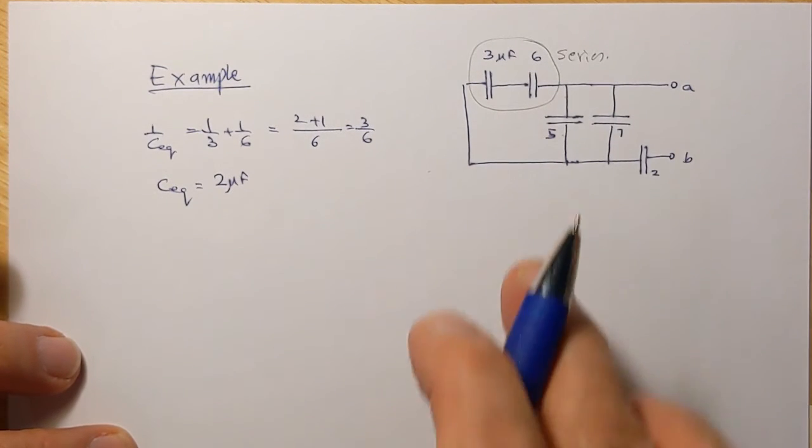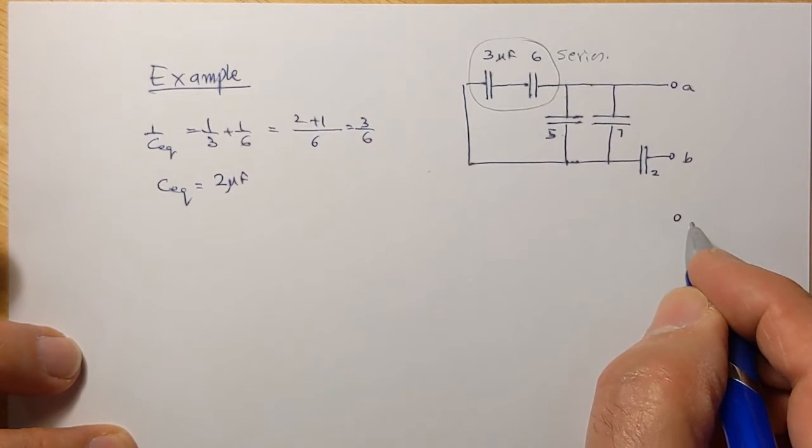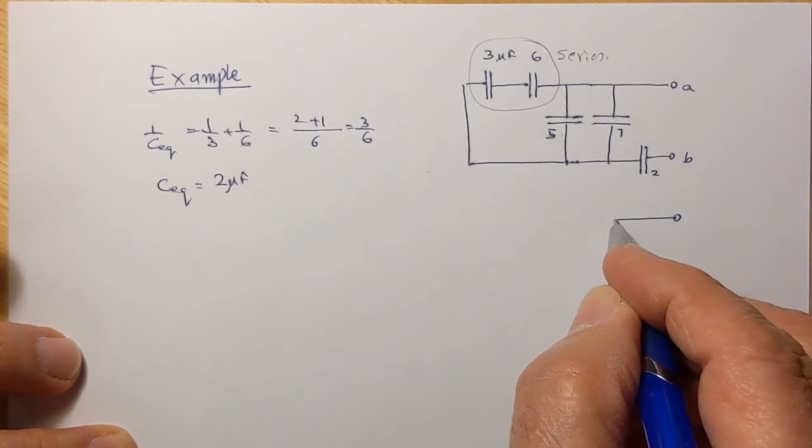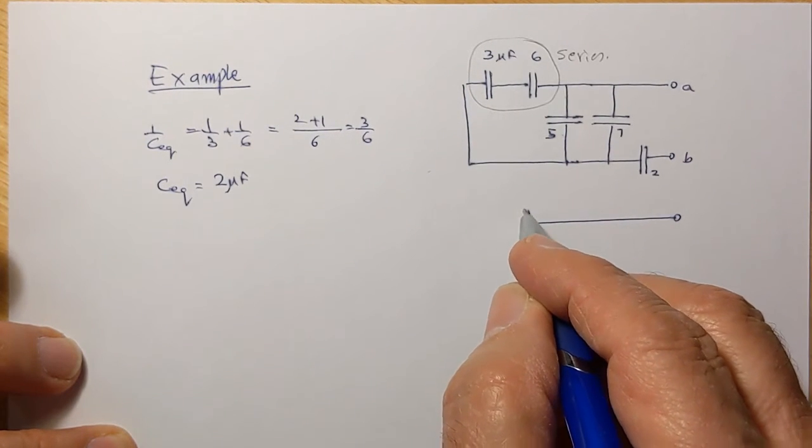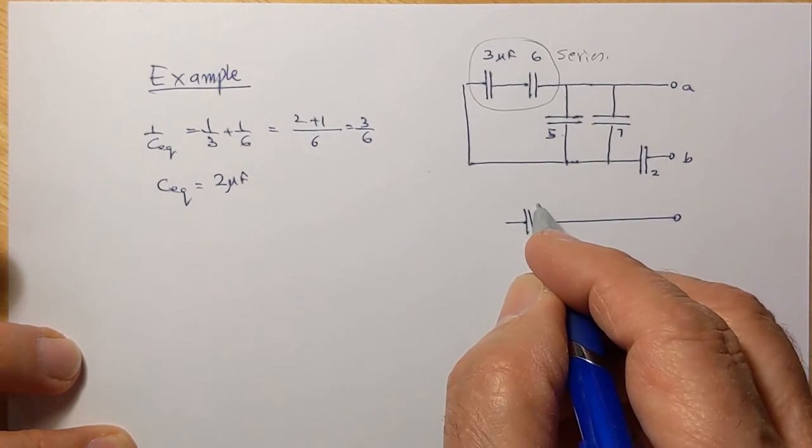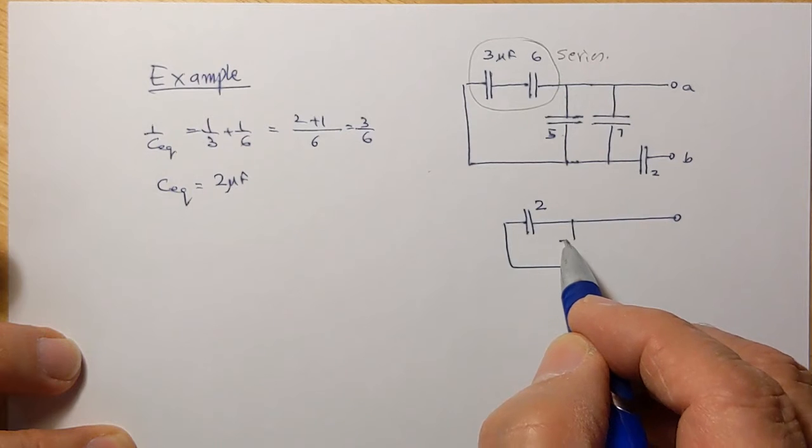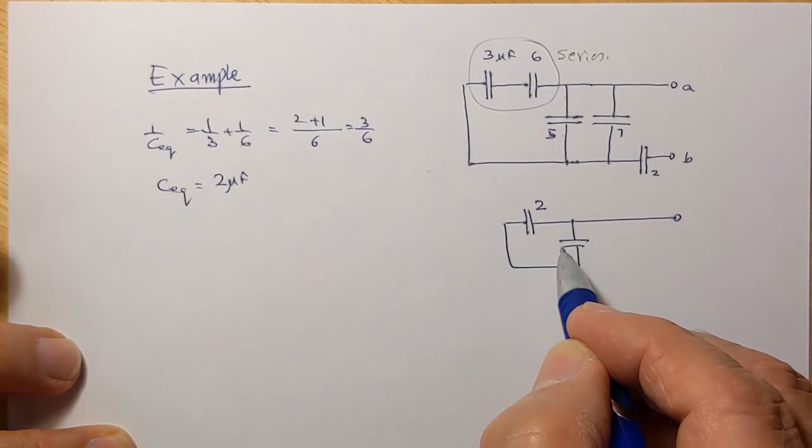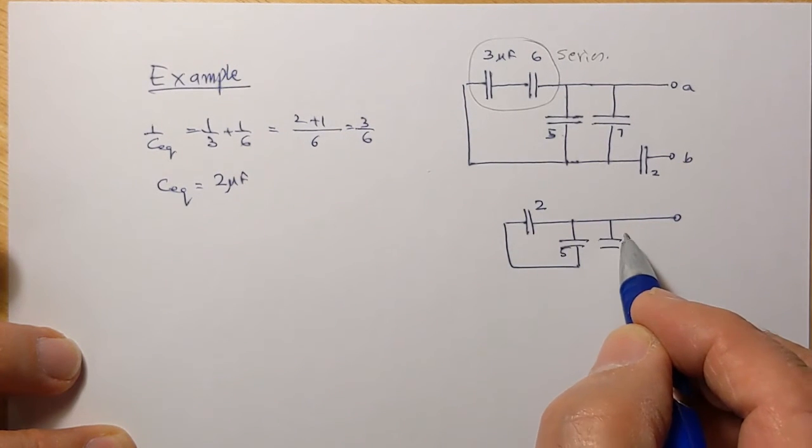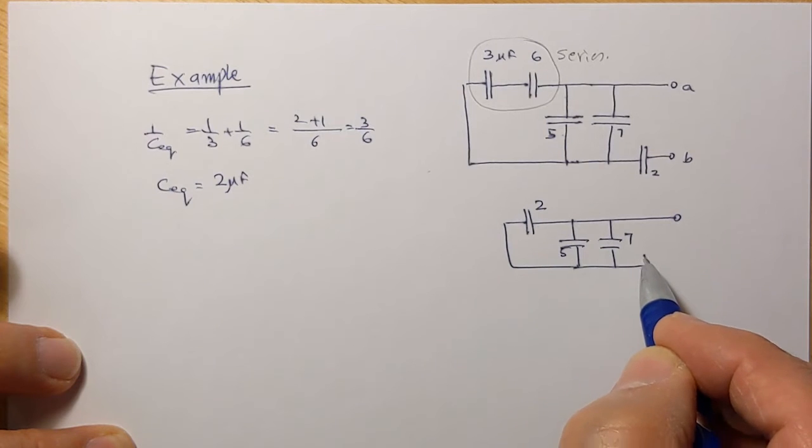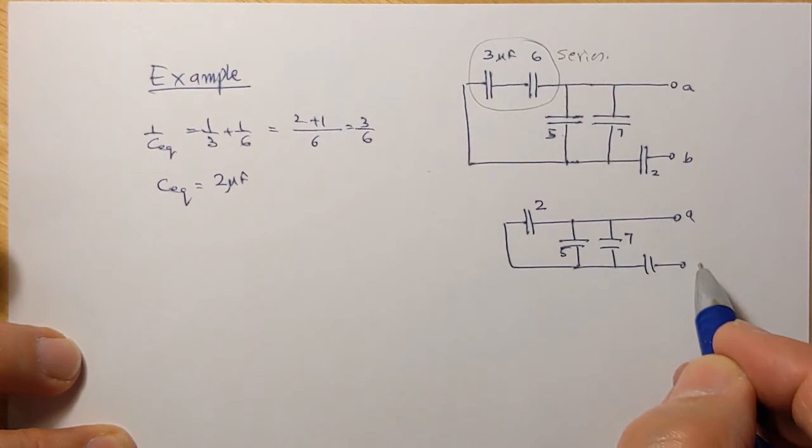Now it's a good idea to draw this once again so that we don't make mistakes. So here this becomes 2. So this is the sum of these two. And now we have these two, which is 5 and 7 and the 2. So that's the point A and B.